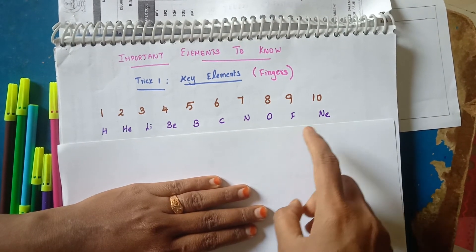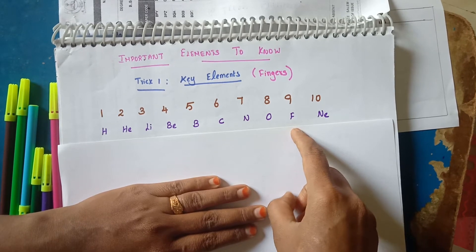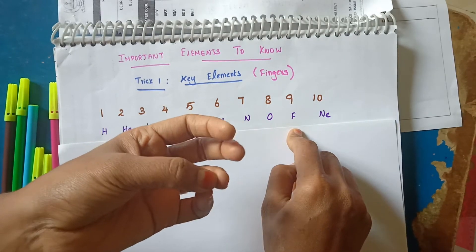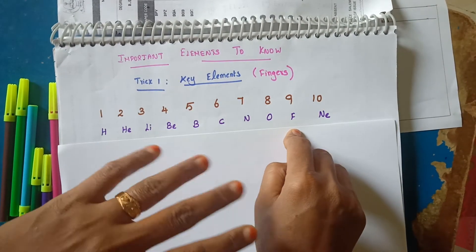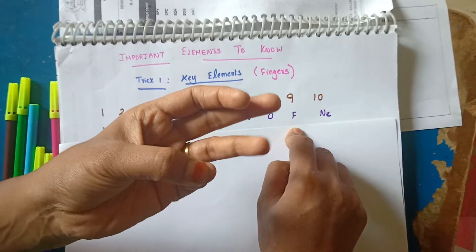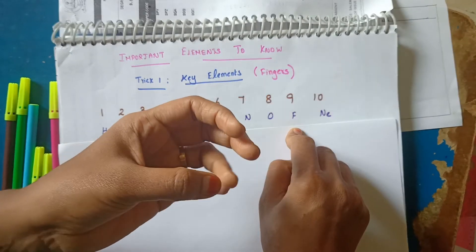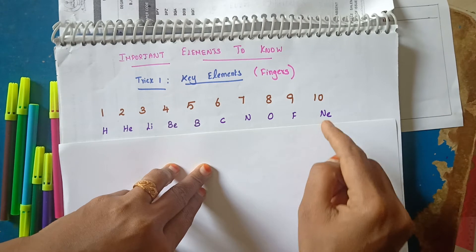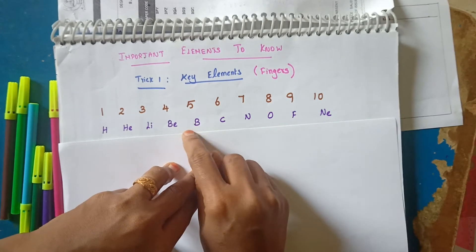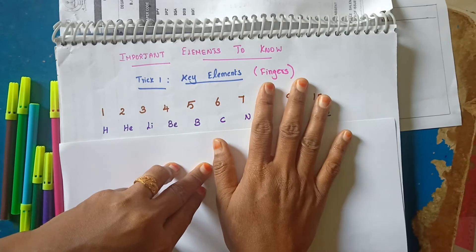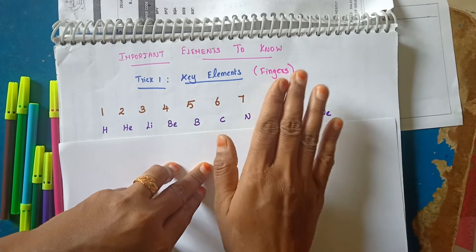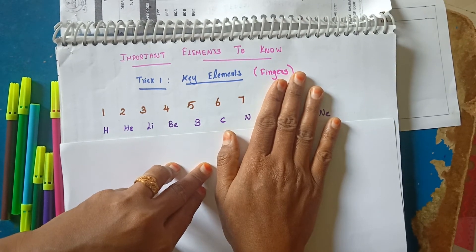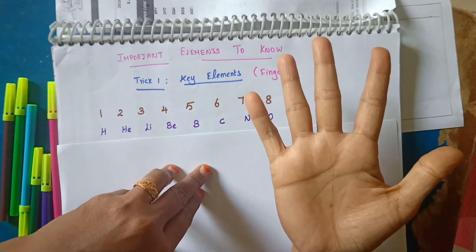What is the trick? I am going to tell you the trick. If you use your fingers, you will be able to remember these elements for your lifetime. How do you say that there are 5 fingers in your hand?